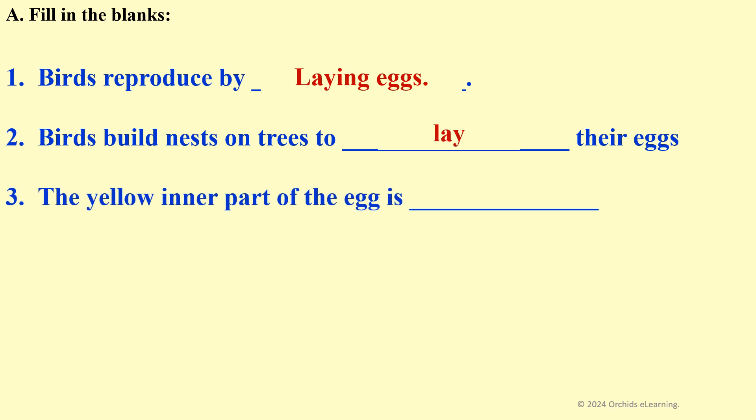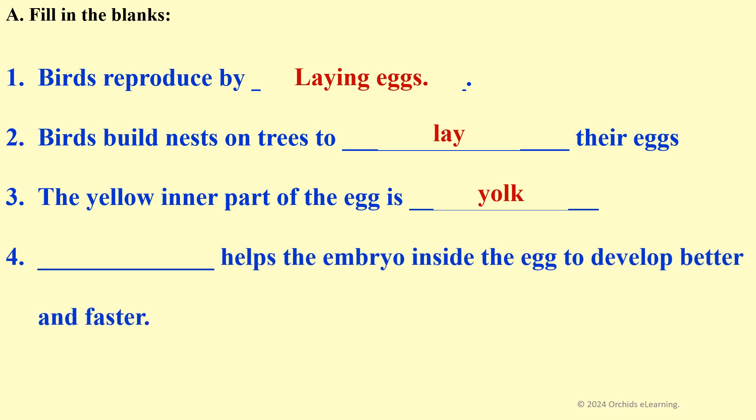The yellow inner part of the egg is yolk. Warmth helps the embryo inside the egg to develop better and faster.